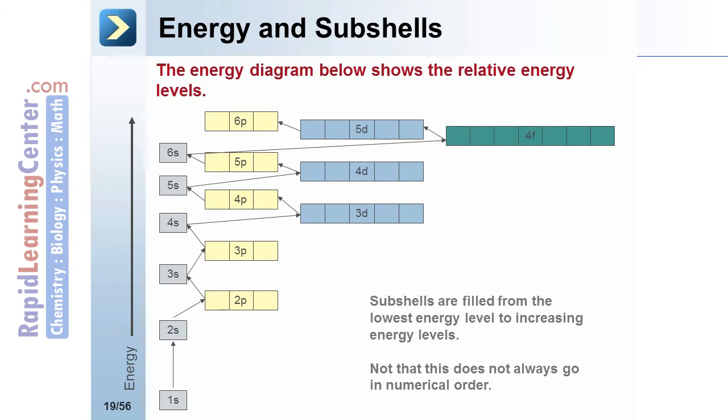However, a specific pair of orbitals may not go in numeric order. 3d is higher energy than 4s, but as an average, the 3s are lower than the 4s.